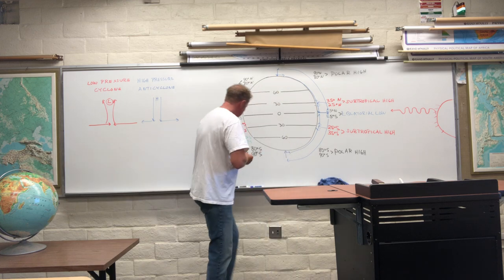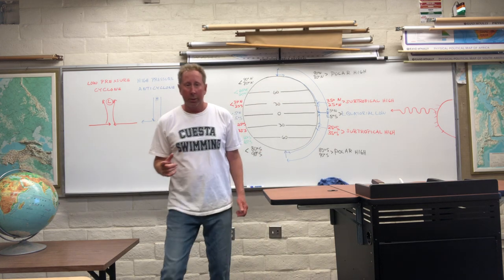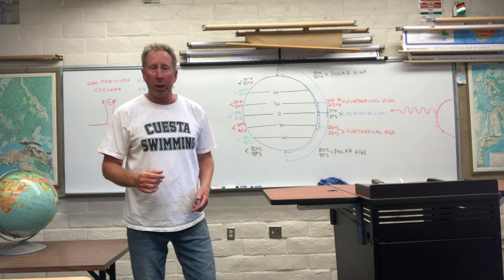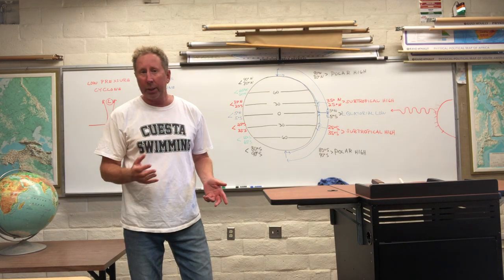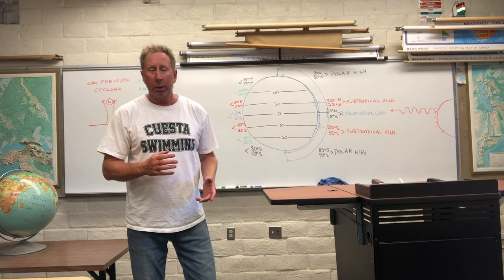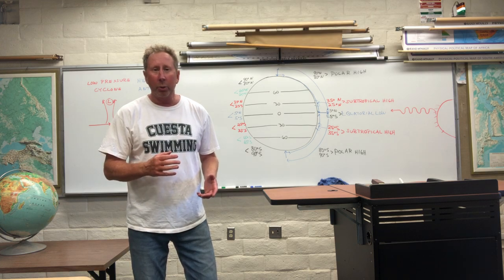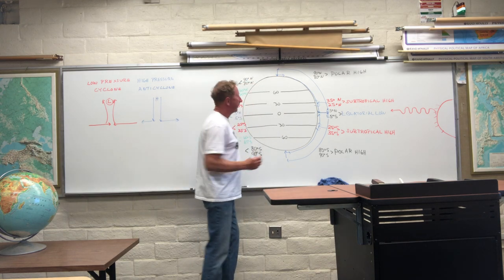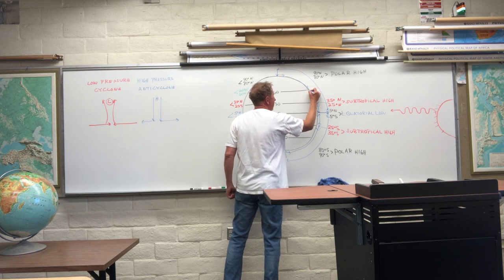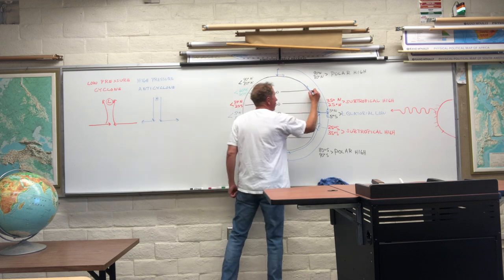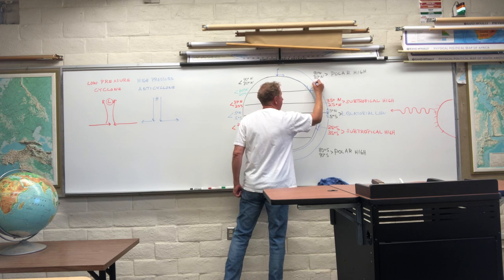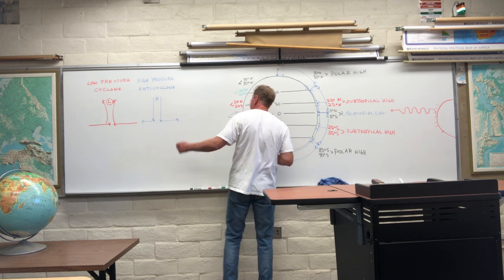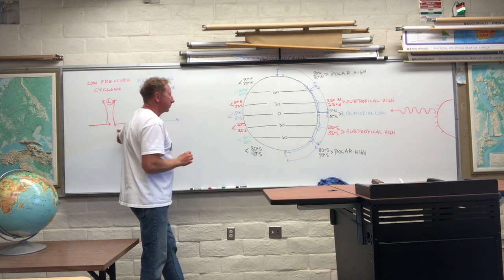I have one more pressure belt to show you. I've got cold air coming from the poles meeting warm air from the subtropics. The warm air is lighter, so it's going to rise. In the southern hemisphere, the same thing — cold air and warm air. When the air is rising, that's low pressure. This would be at about 60 to 65 degrees to the north. This is a belt of low pressure called the subpolar low.